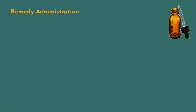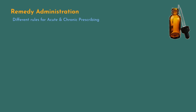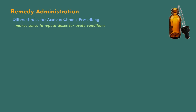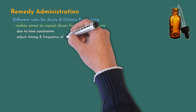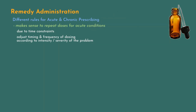Once we've decided on potency, the next question becomes when and how frequently to administer a remedy. Let's talk about some guidelines for the administration of remedies. The rules are quite different for acute and chronic illnesses. Generally speaking, it's more appropriate to repeat doses for acute conditions because acutes often give us less time to work with. Therefore we adjust the timing and frequency of dosing according to the intensity or severity of the problem. We repeat doses more quickly in order to manage our time well and in order to ensure the safety of the patient.